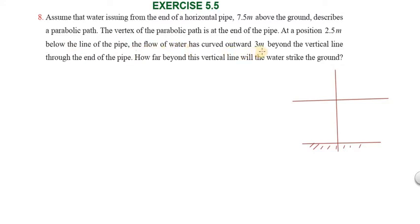of water has curved outward 3 meters beyond the vertical line through the end of the pipe. How far beyond the vertical line will the water strike the ground? So the question is: the ground is 7.5 meters below the pipe. The vertex of the parabolic path - the path is decreasing, so